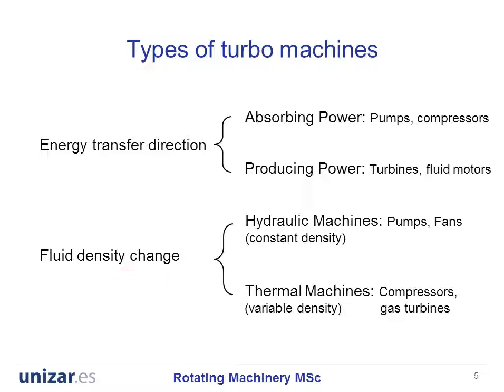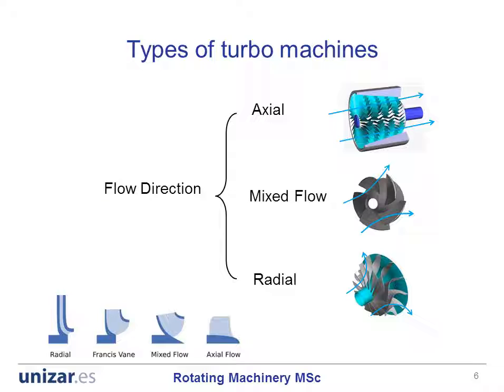From the standpoint of fluid density change, one can talk about hydraulic machines such as pumps and fans, and thermal machines where the fluid undergoes strong density variations, such as in compressors and turbines. From the standpoint of the flow direction, machines are classified into axial, mixed flow and radial machines.